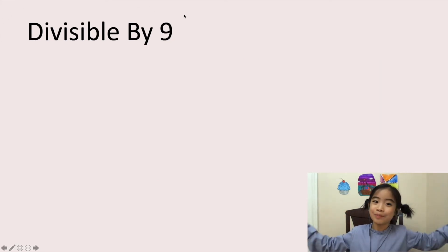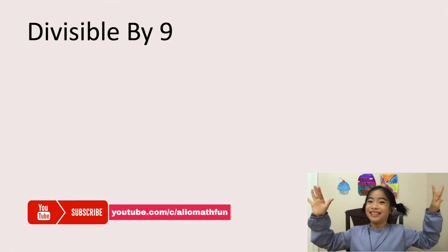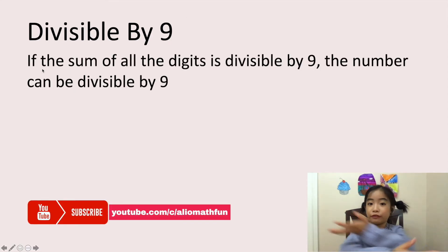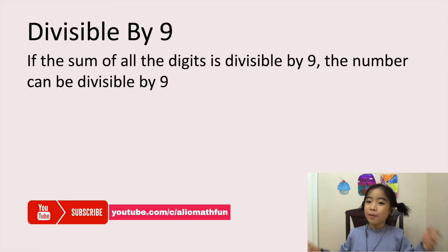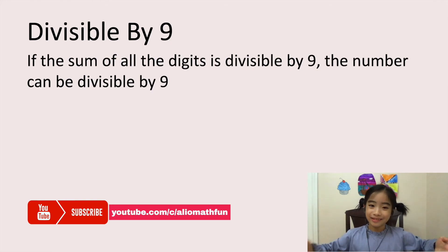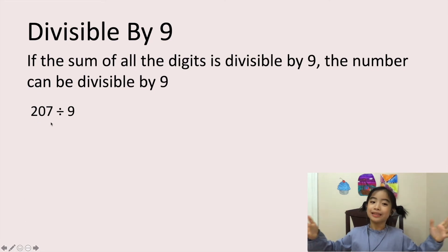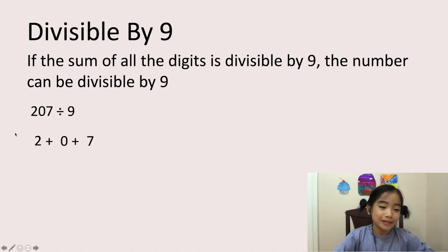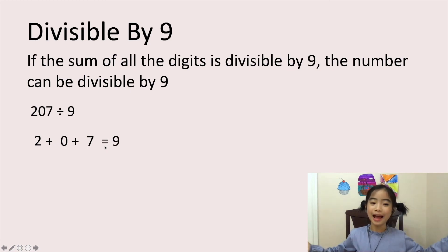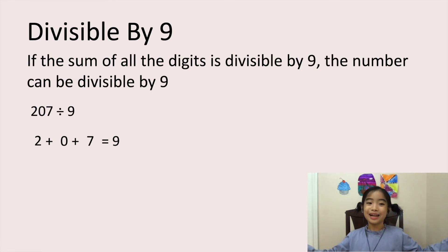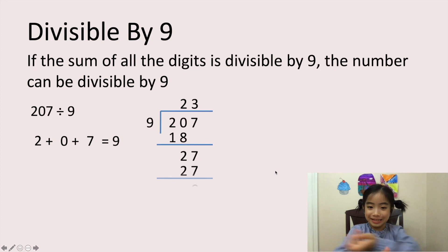Now let's look at divisible by 9. The rule is, if the sum of all the digits is divisible by 9, the number can be divisible by 9. This rule is kind of like the divisible by 3 rule. Let's look at my example: 207 divided by 9. Let's add all the numbers. 2 plus 0 plus 7 equals 9. So 9 is divisible by 9, because 9 times 1 equals 9. Here is the long division.